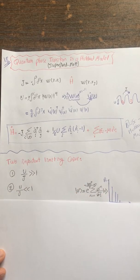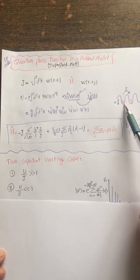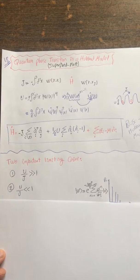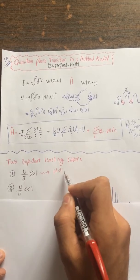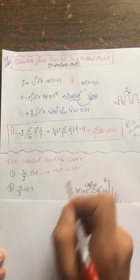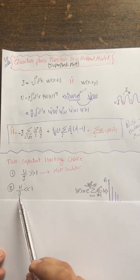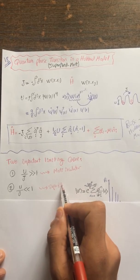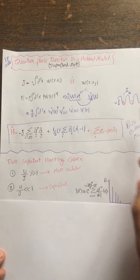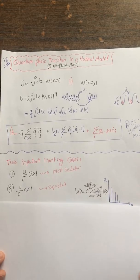If the interaction term U is much larger than J, the particles are trapped — this is the Mott insulator phase. If J, the hopping term, is much larger than the on-site interaction U, you have a Bose-Einstein condensate, which is the superfluid case with complete tunneling hopping from one site to the other. This superfluid-to-Mott-insulator transition was proposed by Ignacio Cirac and Peter Zoller in a landmark 1998 paper.